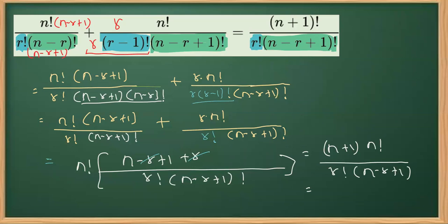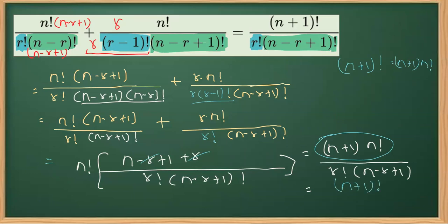The denominator part will remain undisturbed, as this is what we have already obtained as part of the RHS. Now, what we can do with this — I can write this as (N plus one) into N factorial. And as you know, (N plus one) whole factorial is (N plus one) into N factorial. So applying the same thing in reverse order, we get the numerator as (N plus one) whole factorial, and the denominator we have already obtained. So that is equal to the RHS. This is how this question can be done.